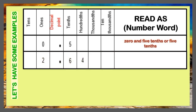The second example has a digit 2 in the 1's place, 6 in the tenths place, 4 in the hundredths place. This number reads as 2 and 64 hundredths.